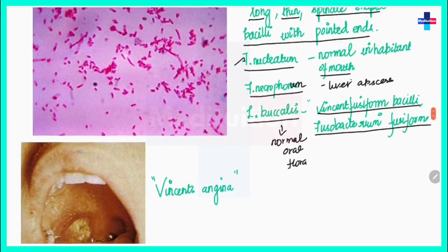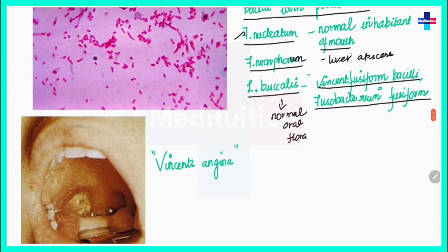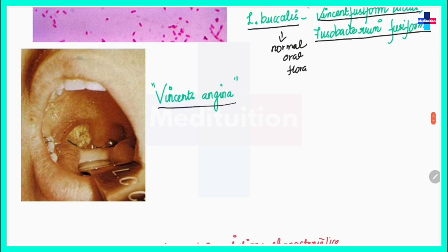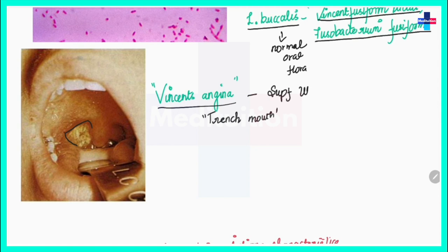Leptotrichia buccalis is seen in acute necrotizing lesions of the mouth. The lesion may look like that of Corynebacterium diphtheriae, but it is caused by Fusobacterium fusiforme. This condition is called Vincent's angina, also known as trench mouth — a progressive painful infection causing ulceration, swelling, and sloughing of dead tissue from the mouth and throat.